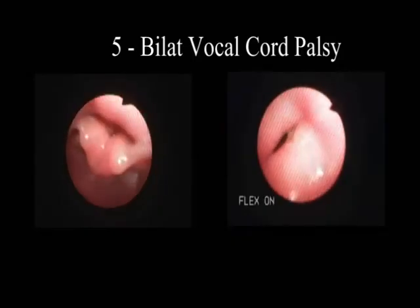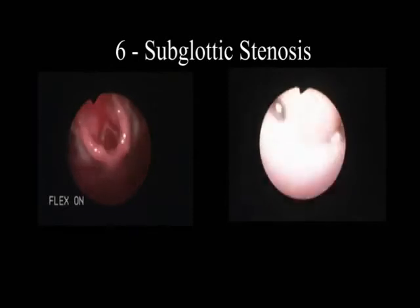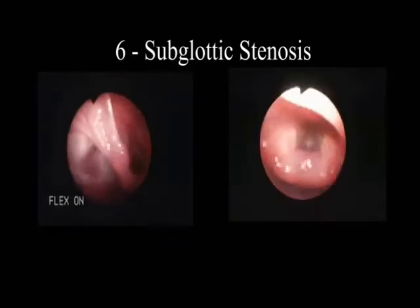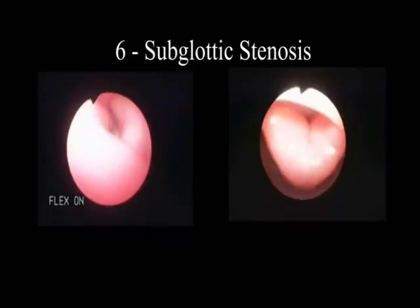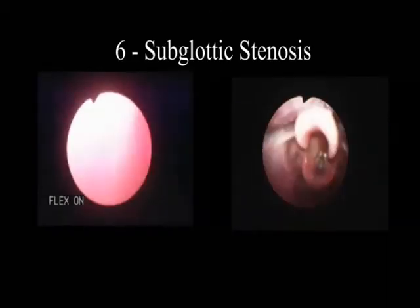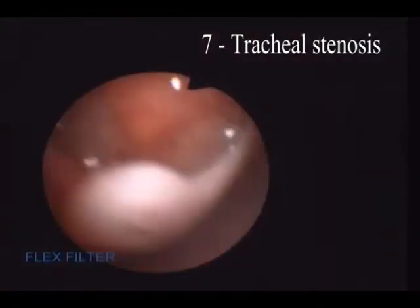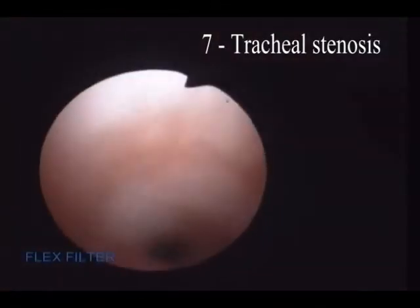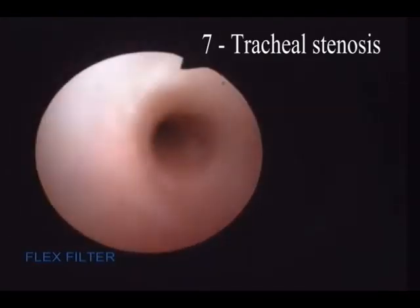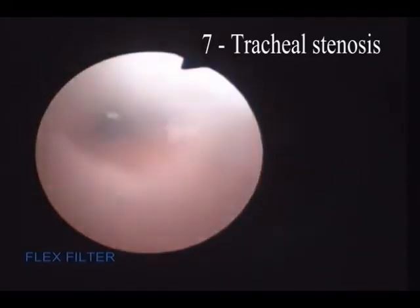Subglottic stenosis presents with stridor, dyspnea, or tachypnea. It may be congenital or acquired after prolonged ventilation. Assessment includes the length, location, character, and grade of stenosis. For mild cases, multiple endoscopic dilations are needed along with laser or steroids. For severe cases, laryngotracheal reconstruction is needed. Tracheal stenosis may take the form of membranous web, segmental, or whole organ stenosis. Gentle dilation using bronchoscopes of increasing diameter may be tried. Upper trachea may be managed by tracheoplasty.